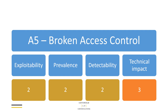As we go down the list we can see these numbers are kind of reducing, so in terms of how exploitable, how common, and how detectable this is, we're looking at something that's slightly less serious. It can be quite tricky to detect, certainly automatically — this tends to be a manual-only approach. But the technical impact of bypassing these controls could be pretty much as serious as anything else, because if you can bypass access control you can probably read any data the system contains, even system information that an administrator might see.